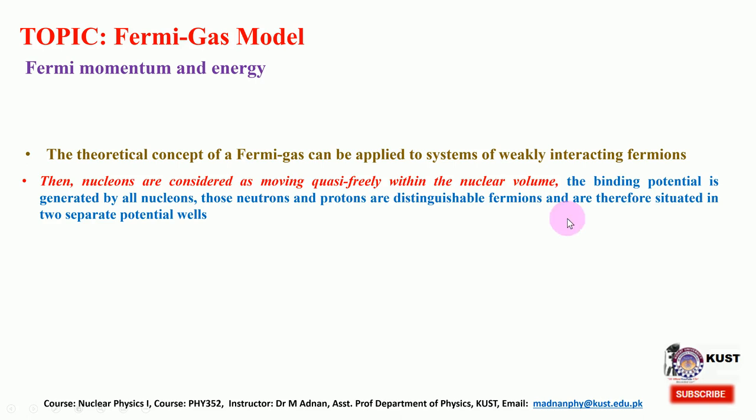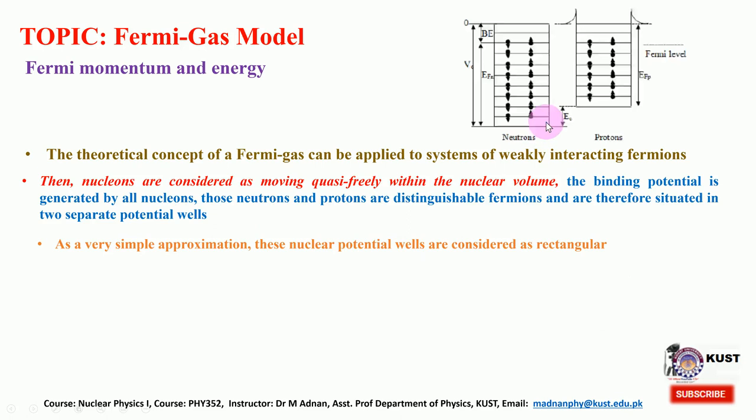Since we are treating the nucleons statistically, neutrons and protons are distinguishable fermions and are therefore situated in two separate potential wells. We will be treating these fermions in two different potential wells, since we are trying to understand the nature of V₀, or the strength of this potential, and why it is so large.